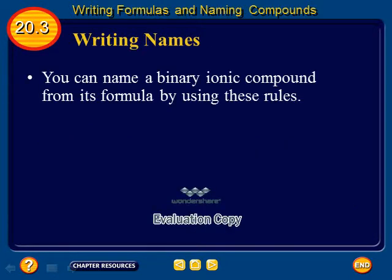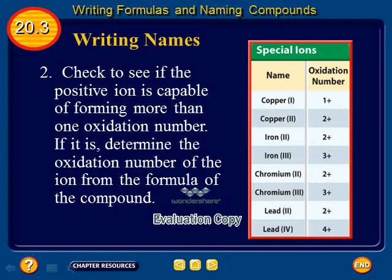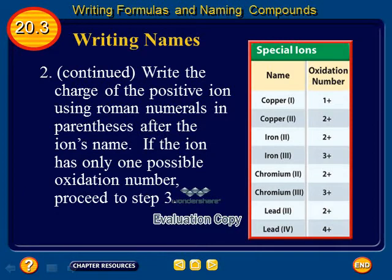You can name a binary ionic compound from its formula by using these rules. Number 1: Write the name of the positive ion. Number 2: Check to see if the positive ion is capable of forming more than one oxidation number. If it is, determine the oxidation number of the ion from the formula of the compound, then write the charge of the positive ion using Roman numerals in parentheses after the ion's name. If the ion has only one possible oxidation number, proceed to step 3.